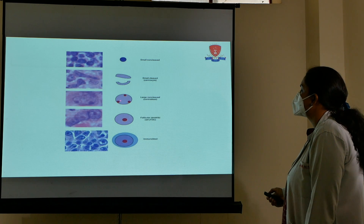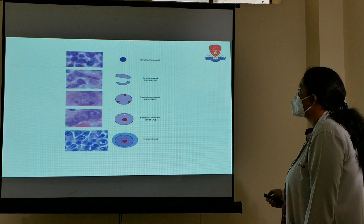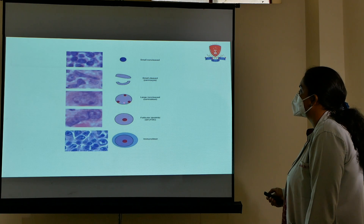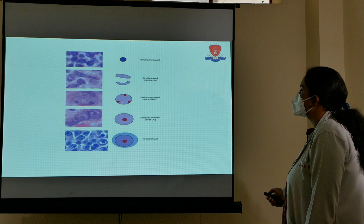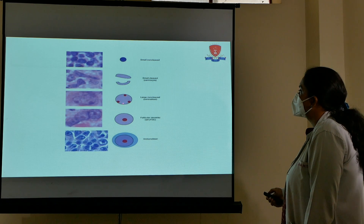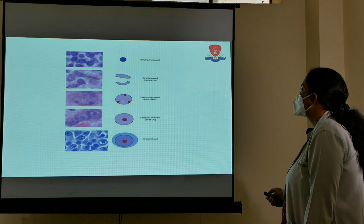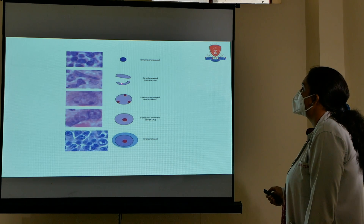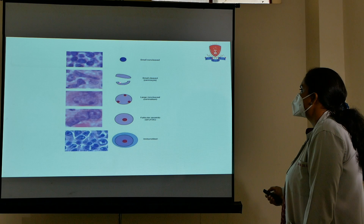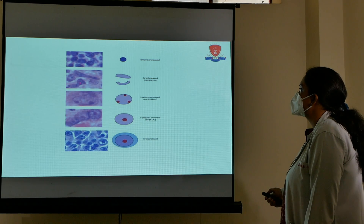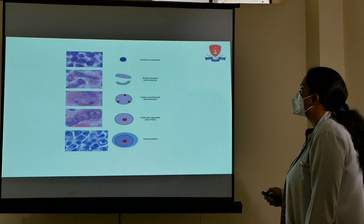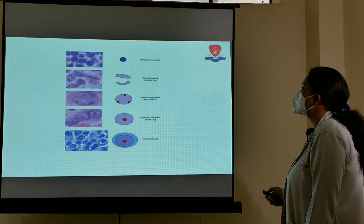You can easily identify the difference between immunoblasts and centroblasts: in immunoblasts, the cytoplasm is abundant, whereas in centroblasts, cytoplasm is not prominent. Instead of one nucleolus, there are two to three nuclei present. These centroblasts then develop into centrocytes, which are small cleaved cells. Nuclear cleaving is seen and is very important — these are smaller than centroblastic cells.